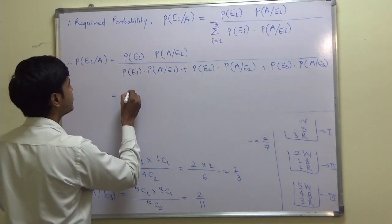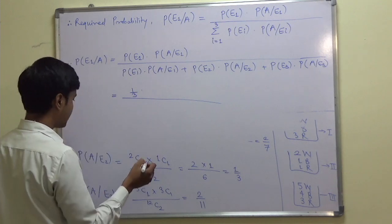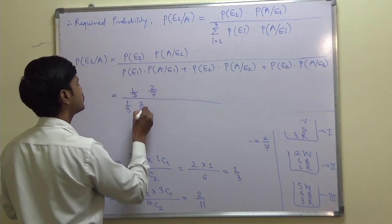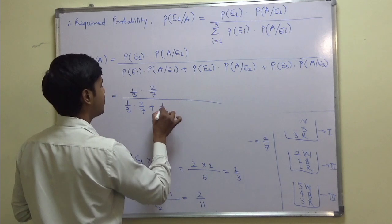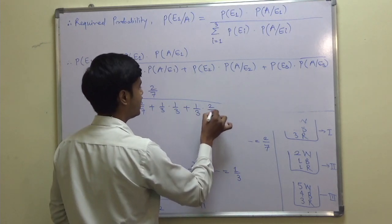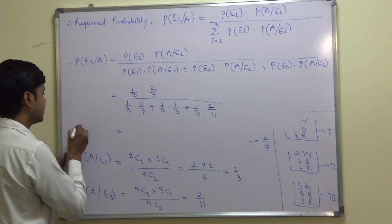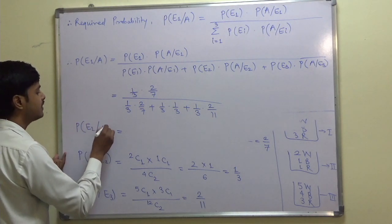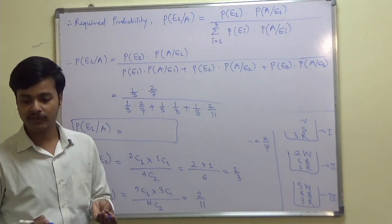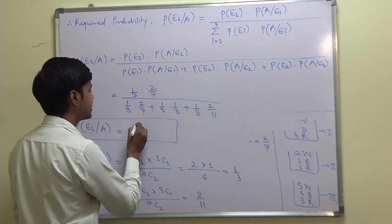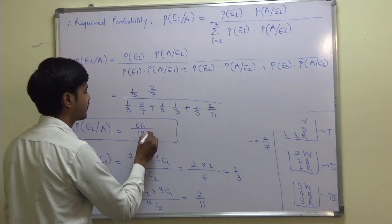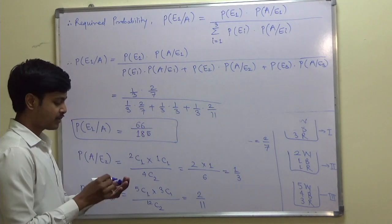Substituting the values: numerator is (1/3) times (2/7). Denominator is (1/3) times (2/7) plus (1/3) times (1/3) plus (1/3) times (2/11). Solving this, the probability of E1 given A comes out to be 66/185.